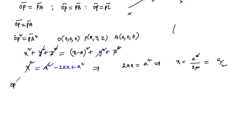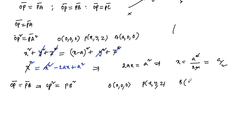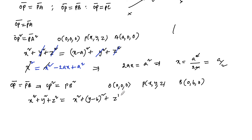Similarly, if OP = PB, that is OP² = PB². Using the distance formula with O(0, 0, 0), P(x, y, z), and B(0, b, 0): OP² = x² + y² + z² = PB² = x² + (y−b)² + z². Cancelling x² and z² on both sides, we get y² = (y−b)² = y² − 2by + b².